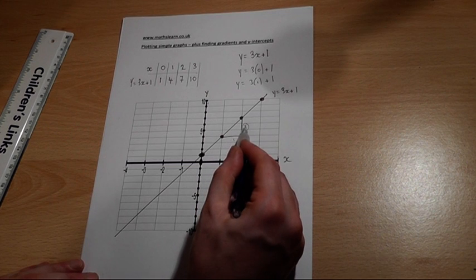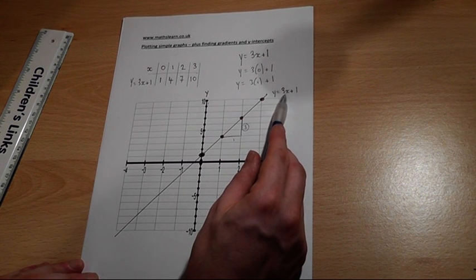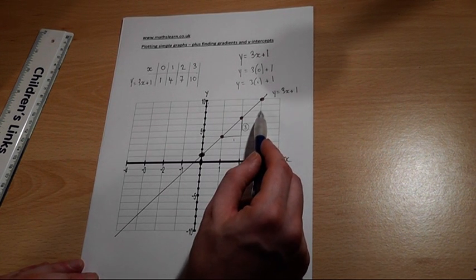Across 1, up 3. And the gradient is always given by the x, the number before the x in the equation, the coefficient.